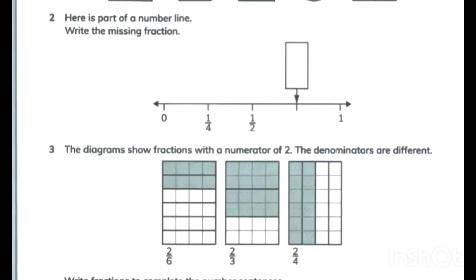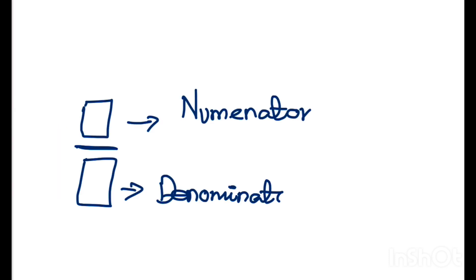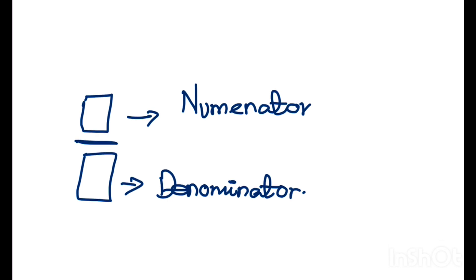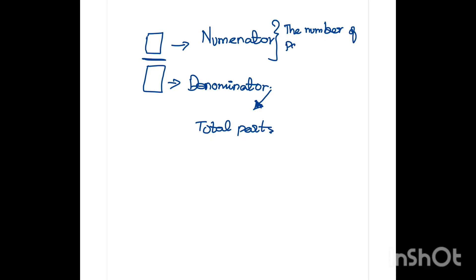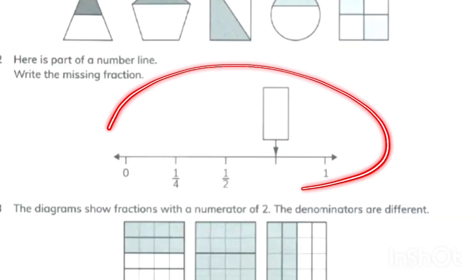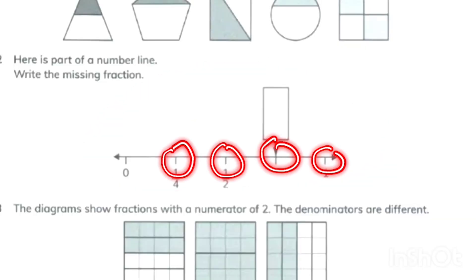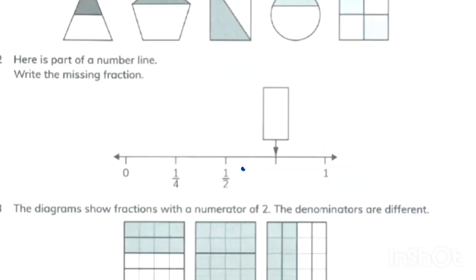Moving on to question number two — it's a number line. Let's understand a little bit about fractions. The upper part is called the numerator and the lower part is called the denominator. The denominator represents total parts a fraction is divided into, while the numerator represents the number of selected parts. We have four parts, so we'll write four as the denominator.